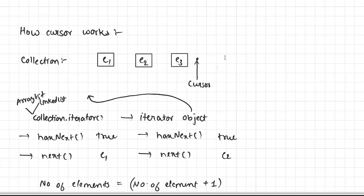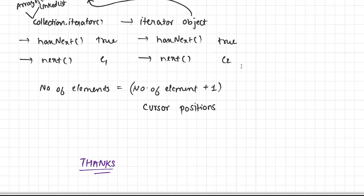I hope you really understood what is the iterable interface, iterator interface, list iterator interface, and what roles they play in the collection framework. You also now understand what a cursor is, how cursor works internally, and how iterator and list iterator use cursors to get references of all elements. This was all the theory. In the next video we will see a practical demo of iterator and list iterator and all their methods. If you learned something valuable, hit the like button, subscribe to the channel, and click the bell icon so you never miss any upcoming video. Thanks for watching — see you in the next one.